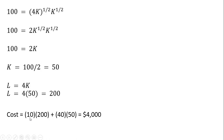The total cost is the wage times units of labor plus the price of capital times units of capital: $10 times 200 plus $40 times 50 equals $4,000. We cannot produce these 100 units at a lower cost than $4,000. That's it for this video — I hope you found it helpful.